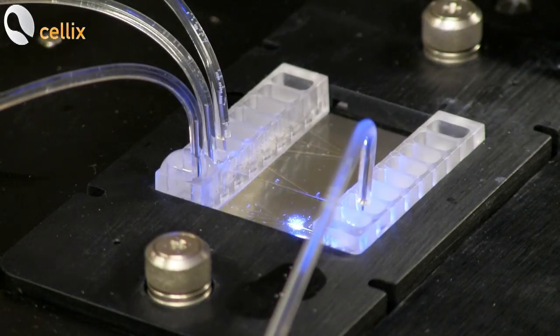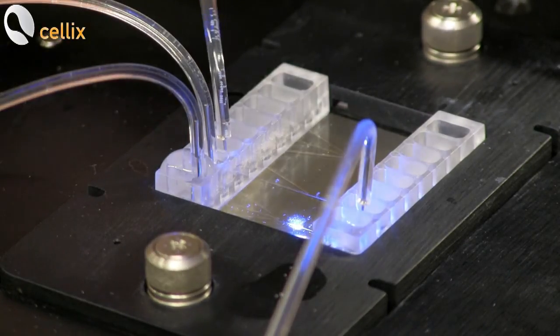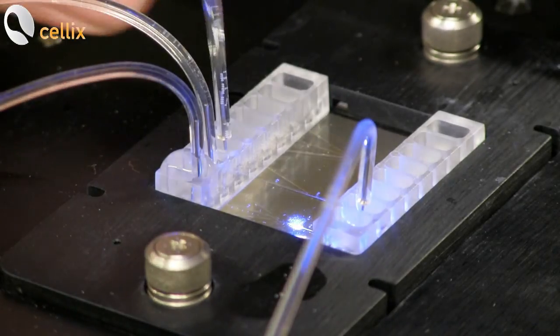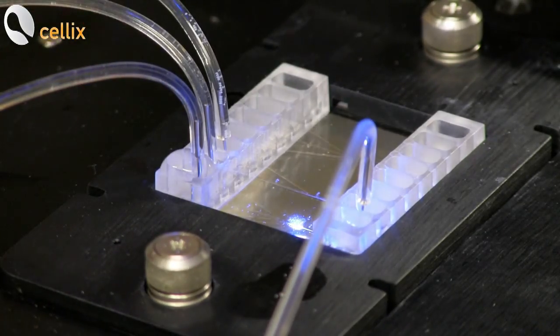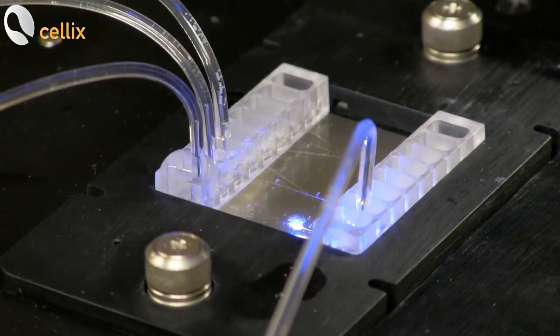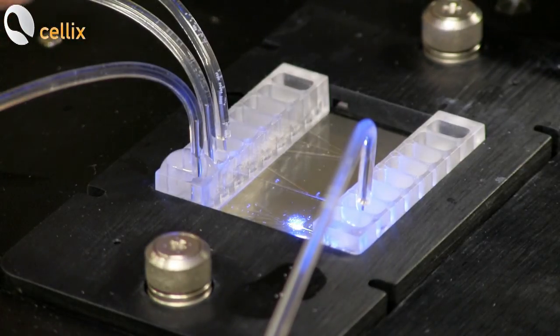For this experiment, we are using the Selix focus flow chip, in which the two connections going to the Unico pumps, which are providing the sheet fluid, are on the side, and the connection to the Exigo pump, which is providing the sample, is in the middle.